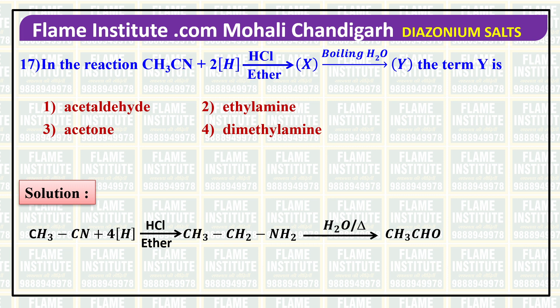CH3CN plus 4H on treatment with HCl and ether gives CH3CH2NH2. So X is CH3CH2NH, and on heating with water (H2O) it gives CH3CHO, known as acetaldehyde. So the first option is the correct answer — acetaldehyde.